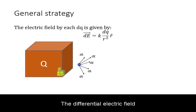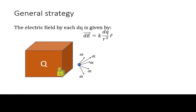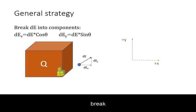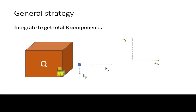The differential electric field from each charge will still be given by Coulomb's law. Because this will be a vector addition, we need to break the differential electric field into components. We then perform the integration on each component to get the total electric field components.